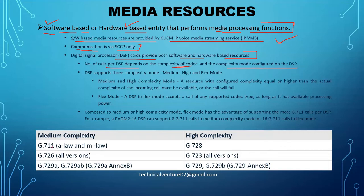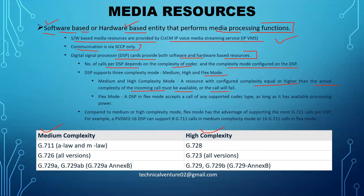We have mainly three types of complexity modes: medium complexity, high complexity, and the flexible complexity mode. In the medium and high complexity mode, a resource with configured complexity equal or higher than the actual complexity of the call must be available, or the call will fail. For example, if your call requires a high complexity codec but your DSP resource is configured for medium complexity, your call will fail.